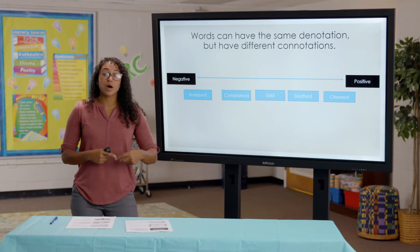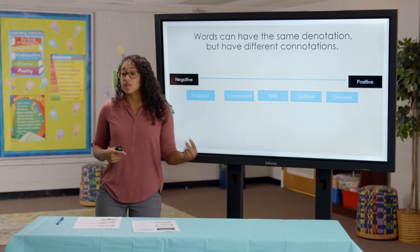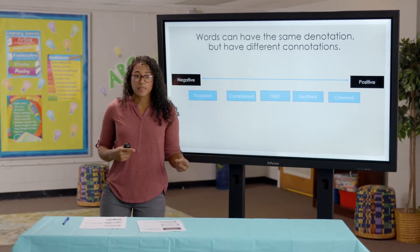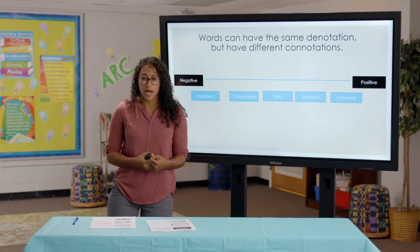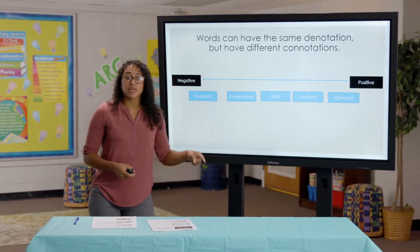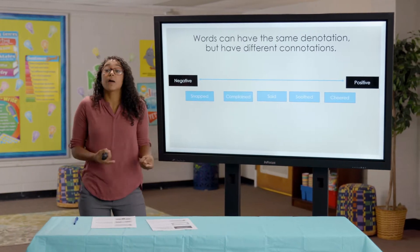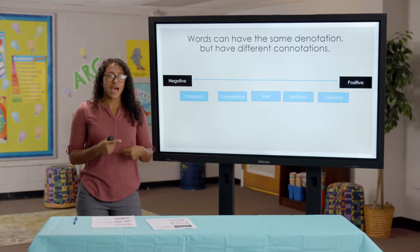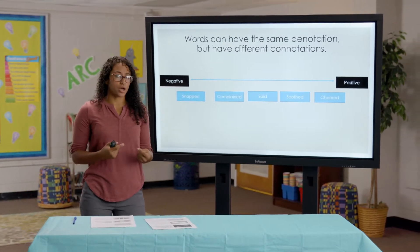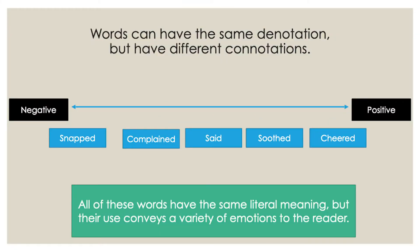If I say 'the mother soothed the toddler,' that has some caring emotion behind it. But if I say 'the woman snapped at the toddler,' that has a lot of anger. So just because words have the same denotation doesn't mean they have the same emotions behind them.